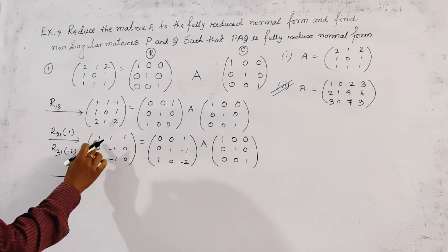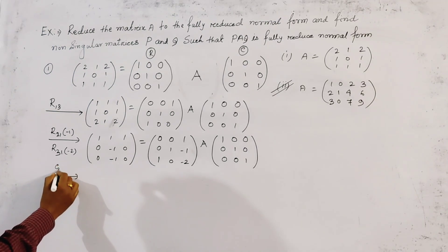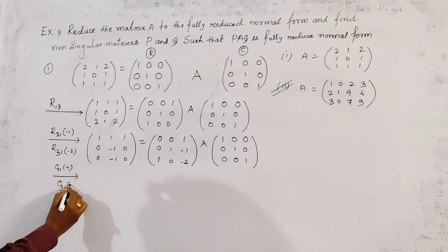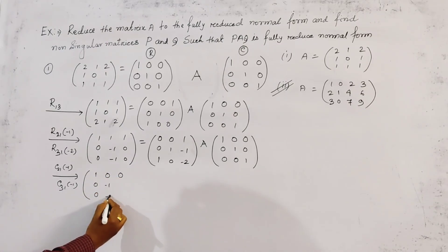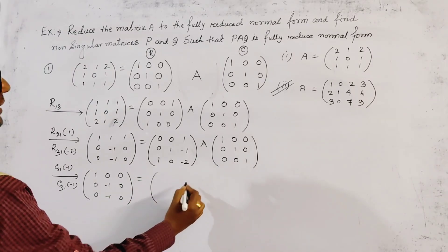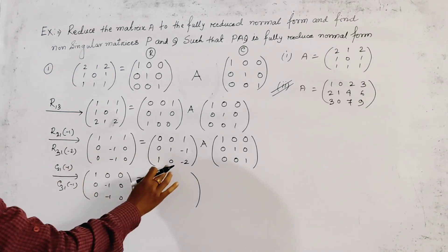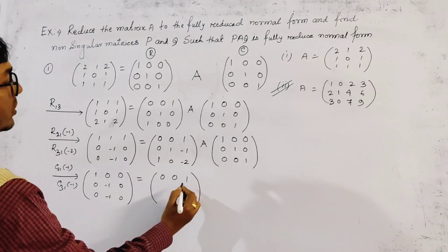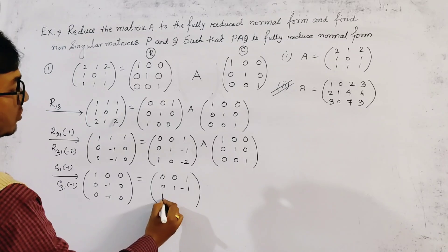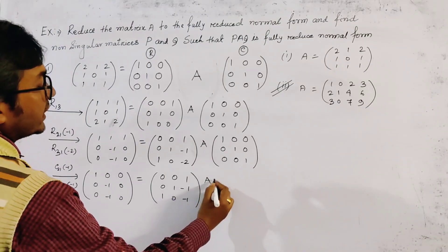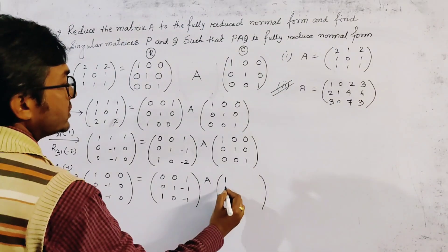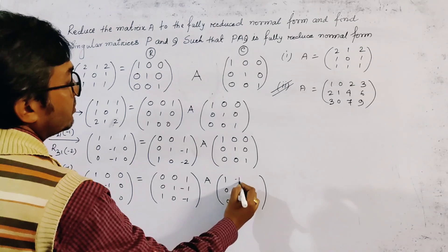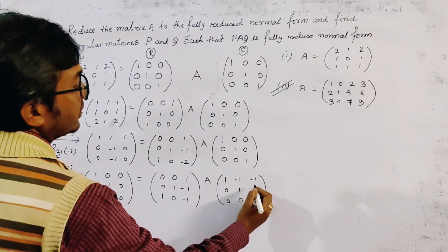Now we make column operations: C21(-1) and C31(-1). After these operations, matrix A becomes [1,0,0; 0,-1,-1; 0,0,0] — wait, [1,0,0; 0,0,0; 0,0,0] with the off-diagonal entries eliminated. The first column of the right-hand matrix is fixed, and the second and third columns become [-1,1,0] and [-1,0,1] respectively.